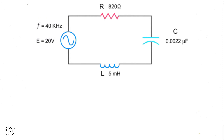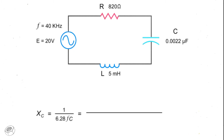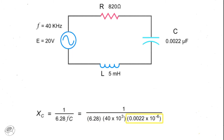To calculate the capacitive reactance in this series circuit, divide 1 by the product of 2 pi, the frequency, and the capacitance. So substituting in the numbers, we have 1 divided by 6.28 times 40 kilohertz times 0.0022 microfarads, which equals 1,809 ohms.